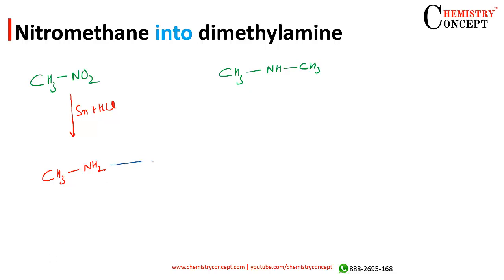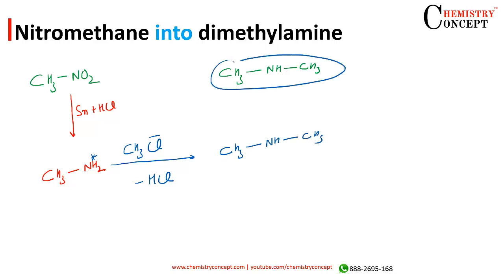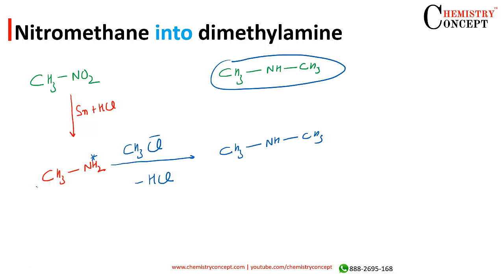Once the reduction has been done, all we need to do is react this compound with CH3Cl. H and Cl will come out as HCl and we will get CH3NHCH3, the desired product. So this conversion can be done in two steps: first converting nitromethane into methanamine, followed by its reaction with chloromethane. That's it.